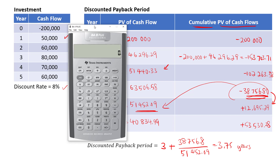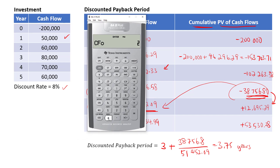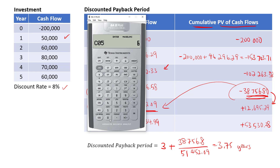Press the cash flow button. CFO will be negative $200,000. Cash flow 1 is $50,000; cash flow 2 is $60,000; cash flow 3 is $80,000; cash flow 4 is $70,000; and cash flow 5 is $60,000. Check to make sure there are no other cash flows entered — the last cash flow should be year 5.